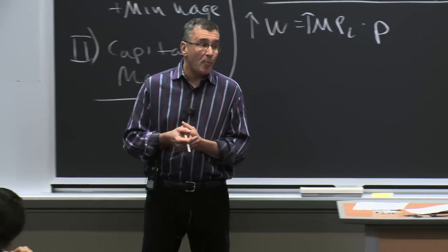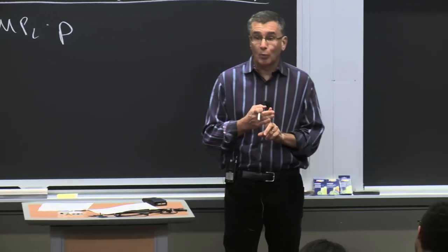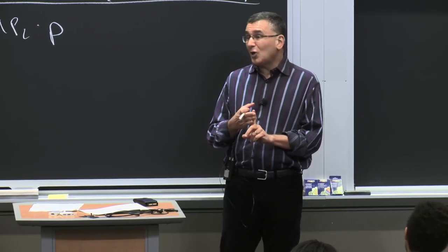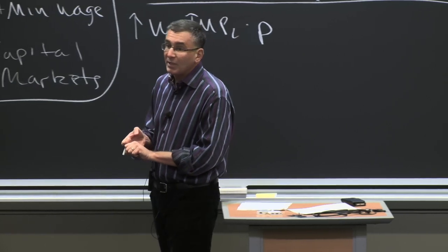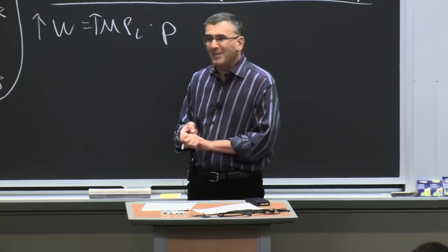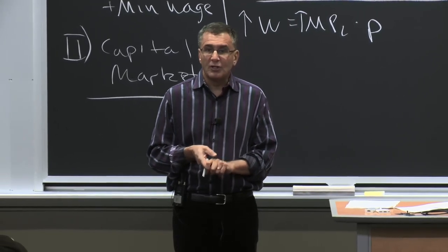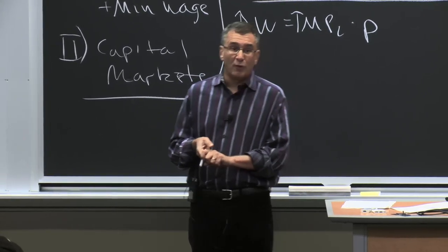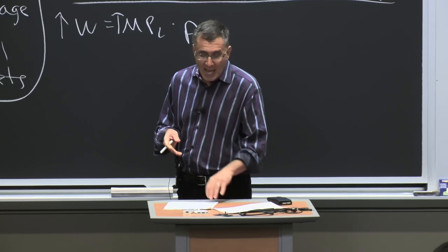The bottom line is you end up with fewer workers, a higher wage, and ambiguous welfare implications. Clearly, social welfare goes down. Whether worker welfare goes up or not depends on the size of area B versus area E — it's not clear if worker surplus goes up. What's clear is that social welfare has gone down, because welfare is proportional to the quantity in the market. The further you deviate from the perfectly competitive quantity, the bigger the deadweight loss.